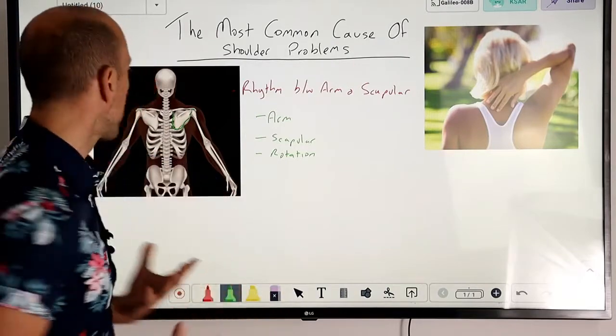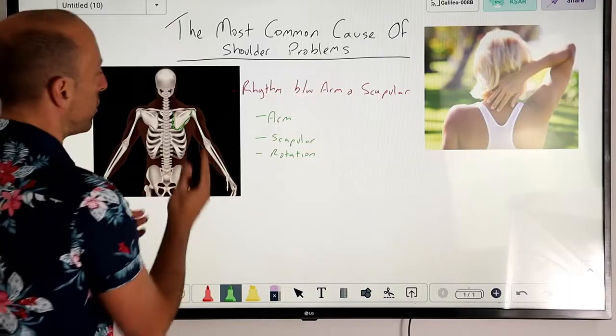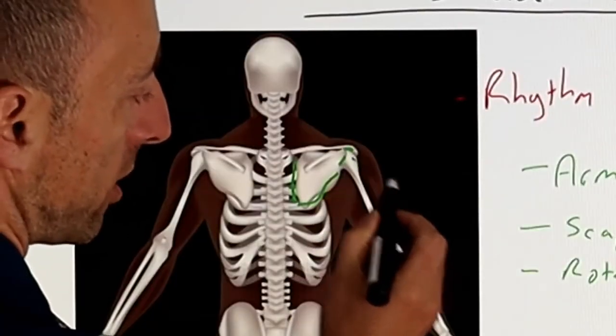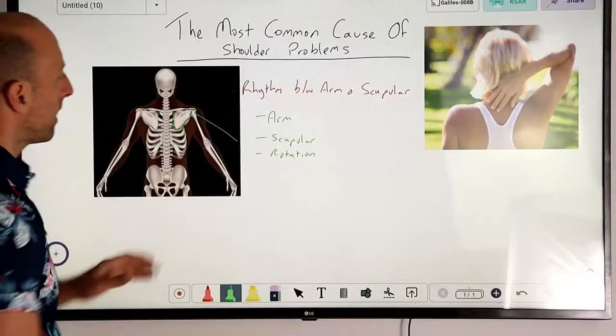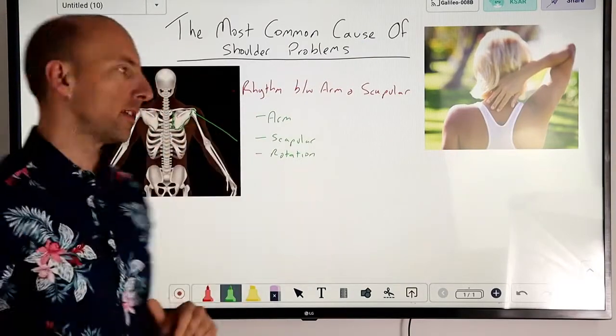How it basically works is when we first initiate movement and our arm goes from this position out this way, it's just the arm itself that tends to move, so we just get this motion occurring.